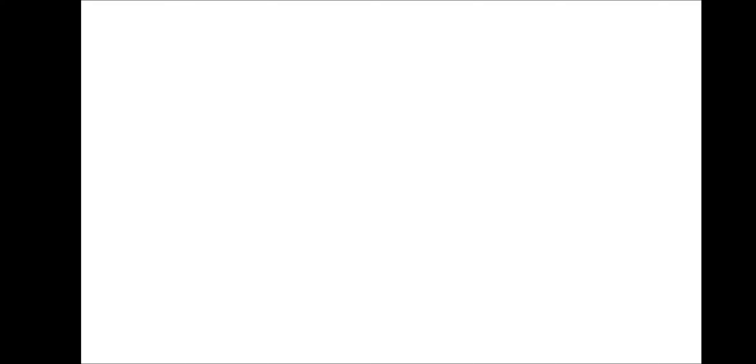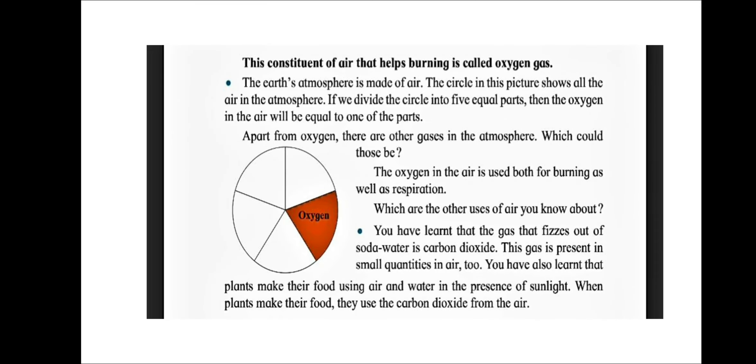This constituent of air that helps burning is called oxygen gas. The earth's atmosphere is made up of air. The circle in the picture shows all the air in the atmosphere. If we divide the circle into 5 equal parts, then the oxygen in the air will be equal to one of the parts.